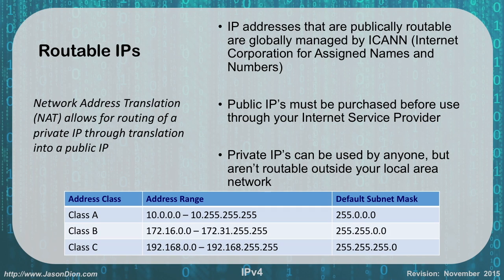One tip to remember what these subnet masks are by default: think A, B, C — think 1, 2, 3. Class A has one set of 255s, Class B has two sets of 255s, and Class C has three sets of 255s. That helps a lot of students remember what the A, B, and C default masks are.